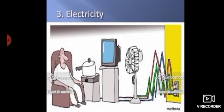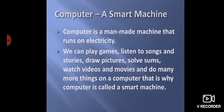These are three types of machines. Now last topic is computer a smart machine. Hum computer ko smart machine kyun kehte hai? Computer is a manmade machine that runs on electricity. Computer ek manmade machine hai. Insaan ne bana hai aur wo run kis pe hoti hai? Electricity pe. Computer pe hum games khel sakti hai, songs sun sakti hai, stories sun sakti hai, pictures draw kar sakti hai, sum solve kar sakti hai, videos dekh sakti hai, movies dekh sakti hai. Aur bhi bhoat kuch hum computer pe kar sakti hai. That is why it is called a smart machine.